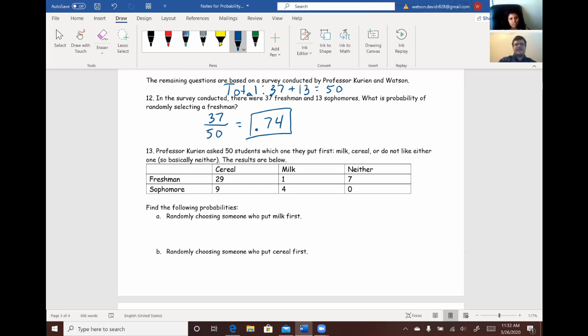All right, number 13. So, Professor Kurian asked 50 students which one they put first, milk, cereal, or neither. The results are below. So, this is what we found out that 29 freshmen put cereal, one put milk, and seven put neither. For the sophomores, nine put cereal first, four put milk, and nobody picked neither.